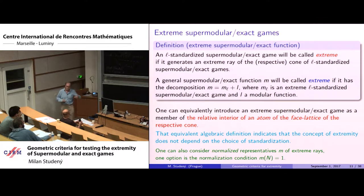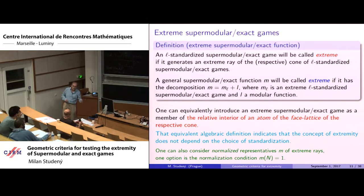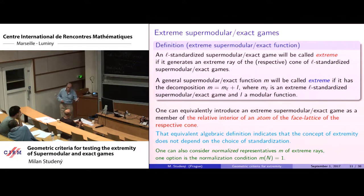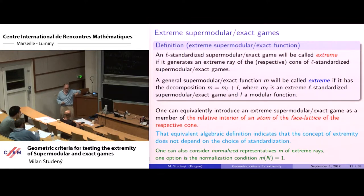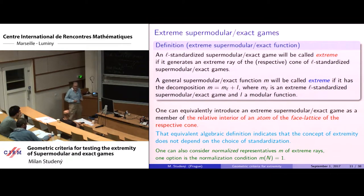For every cone, we consider suitable normalization. One option is to fix the value for the grand coalition. Another preferred option is to use an integral representative, since all cones are rational and every extreme ray is generated by an integer-valued function with no common prime divisor among its values.